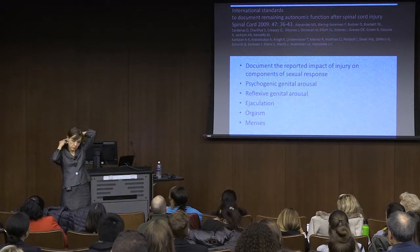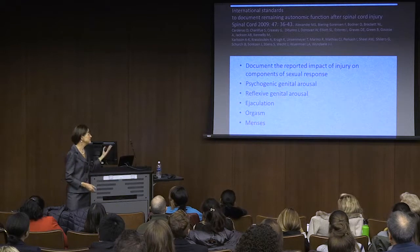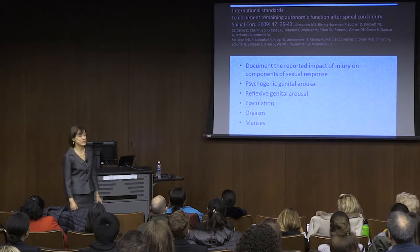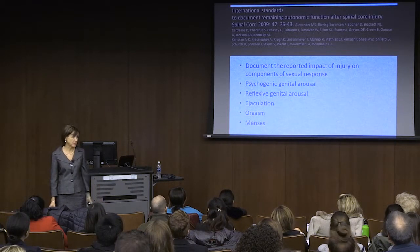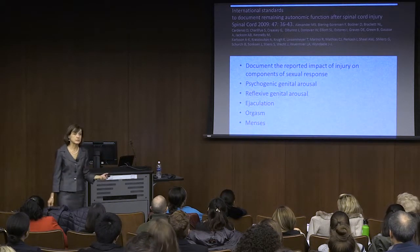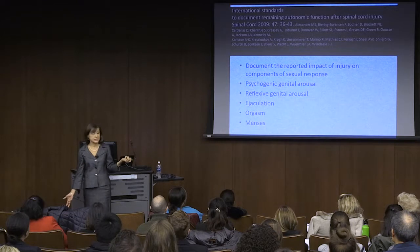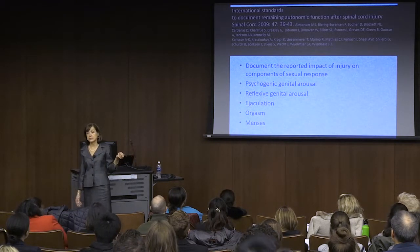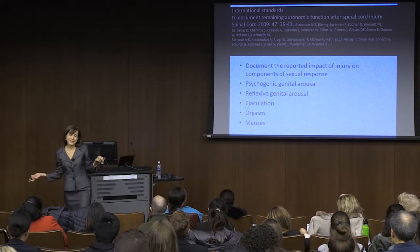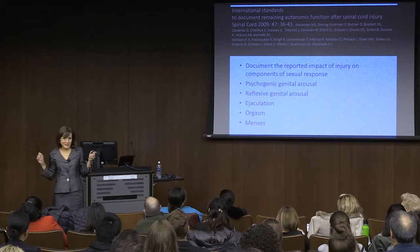A big part of what we've done internationally is that back in 2009, we published the International Standards to Document Remaining Autonomic Function After Spinal Cord Injury. There is a component specifically for sexual function, and it documents the reported impact of injury on sexual response: psychogenic arousal, reflex arousal, ejaculation, orgasm, and menses.